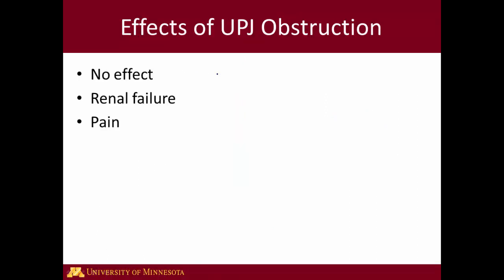When we look at the effects of UPJ obstruction, there are a number of possibilities. It may have no effect at all, it may cause renal failure or decreased kidney function, or it may cause pain. If there's no effect, often people don't even know that UPJ obstruction is present. But if they tend to have pain especially, or if there's decreased renal function, then the negative effects of UPJ obstruction are apparent, and this is what leads to treatment for UPJ obstruction. Thank you very much for listening to this discussion of UPJ obstruction.